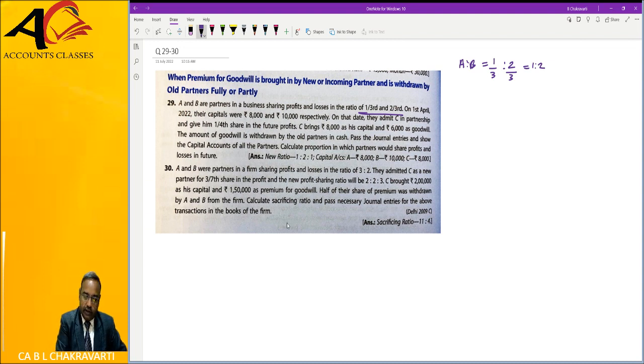C is admitted for 1/4 share. 8,000 capital and 6,000 goodwill. Amount of goodwill is withdrawn by the partners. Pass entries.